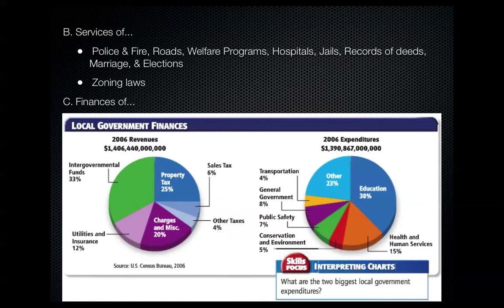When it comes to finances, the bulk of revenue a city or county generates comes from taxes, primarily property taxes. When a housing market crashes and property values fall, the city generates less revenue through property taxes — this is why city governments can shrink in size during a housing market crisis. Intergovernmental funds are funds given to a city or county from the state or federal government, and these make up another major source of revenue.